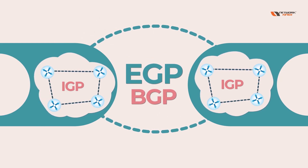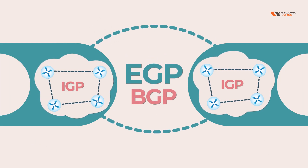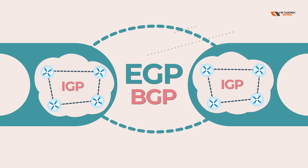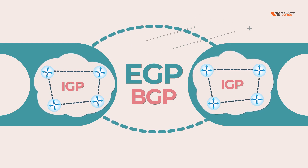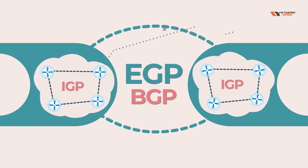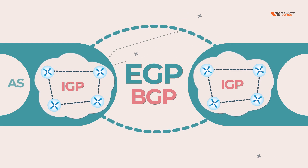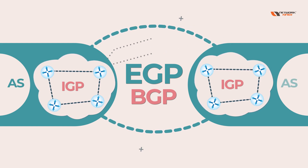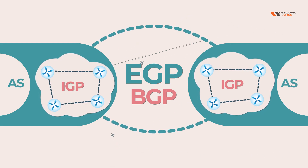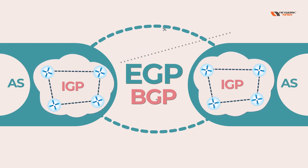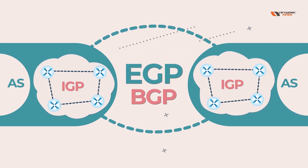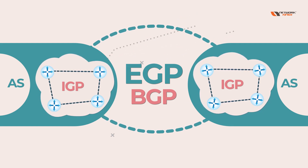There is only one protocol under the EGP category, and that is BGP. So whenever we want to connect with different companies or different ISPs, we use BGP, and then we use the AS number.